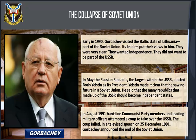Yeltsin made it clear that he saw no future in the Soviet Union. He said that the many republics that made up the USSR should become independent states. In August 1991, hardline communist party members and leading military officers attempted a coup to take over the USSR. The coup failed.